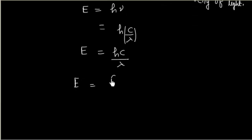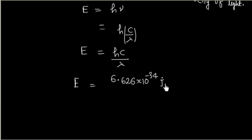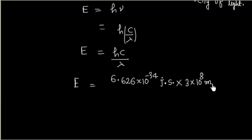Now let us work in SI units. H has a value of 6.626 × 10⁻³⁴ Joule·second, and C is the velocity of light with a value of 3 × 10⁸ meters per second.